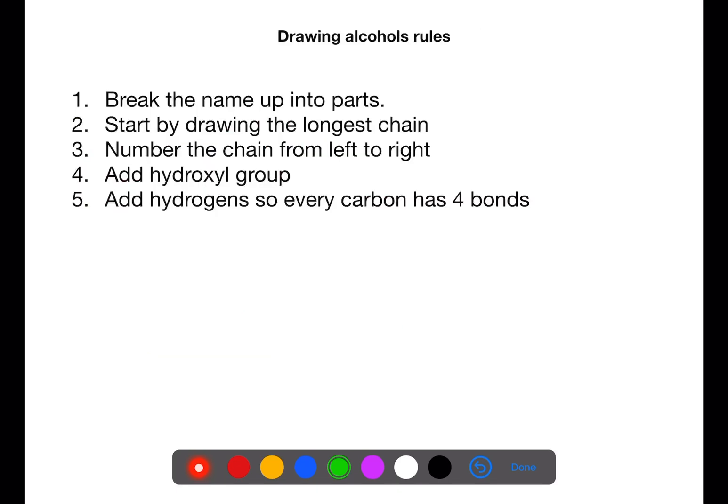To draw alcohols you need to break the name up into parts. Start by drawing the longest chain of carbons and number them from left to right. You then add the hydroxyl group on the number indicated in the name and add hydrogens so that every carbon has four bonds.